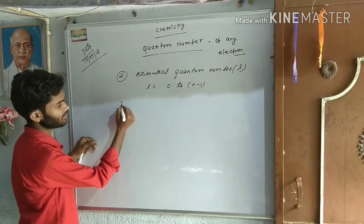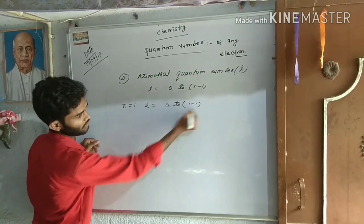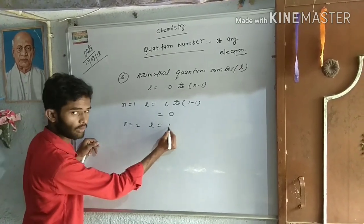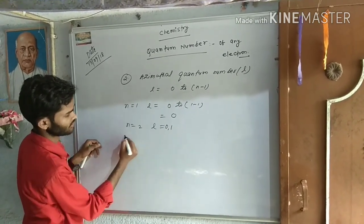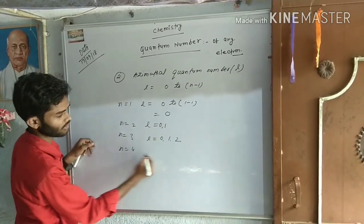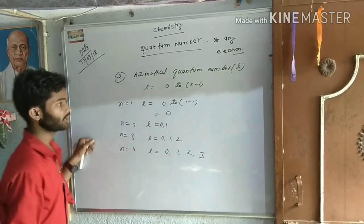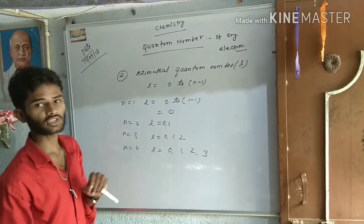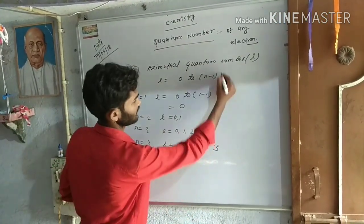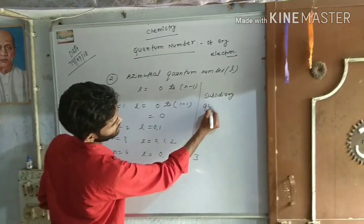जब n=1, तब l = 0 to (1−1) = 0। जब n=2, तब l = 0, 1। जब n=3, तब l = 0, 1, 2। यह हुआ azimuthal quantum number। और इसका दूसरा नाम होता है subsidiary quantum number।